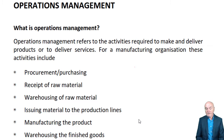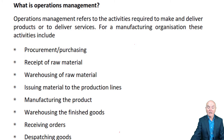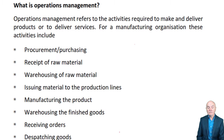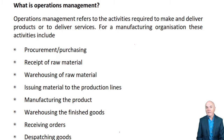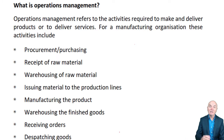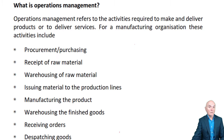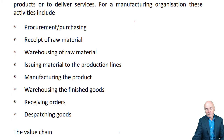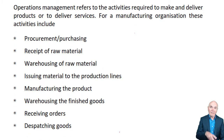So it's procurement and purchasing, receipt of the raw material, warehousing it — unless you go on a just-in-time basis — issuing the material as needed to the production lines, manufacturing the product, warehousing the final product unless it's going directly to the customers, receiving orders, dispatching goods. This is all part of carrying on the essence of the business.